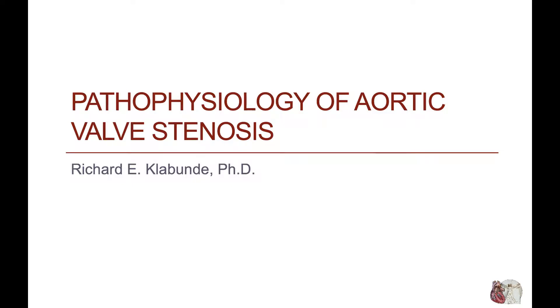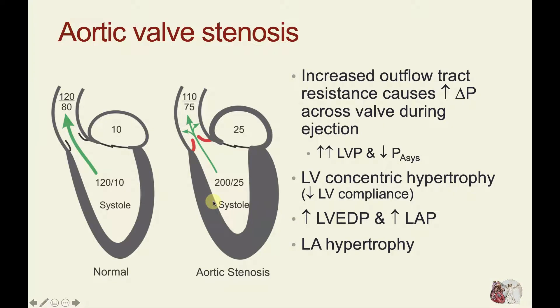This lecture will examine the pathophysiology of aortic valve stenosis. I would like to describe the changes that occur in the left ventricle and left atrium in response to aortic valve stenosis. In this figure, I'm showing a normal left ventricle, which has a systolic pressure of 120 and end diastolic pressure of 10, ejecting blood into the aorta with an aortic pressure of 120 over 80.